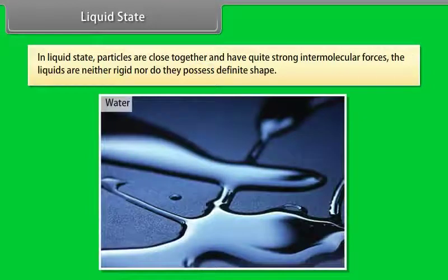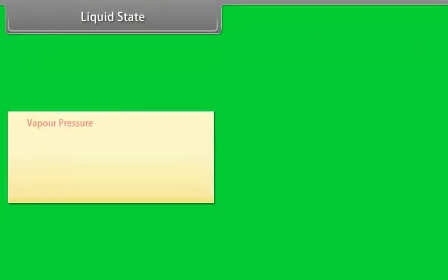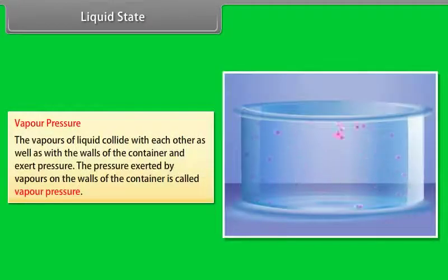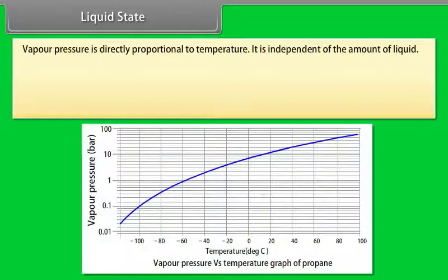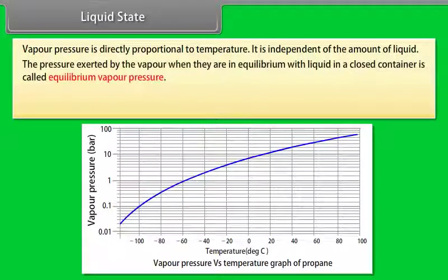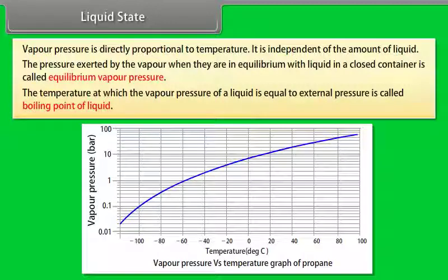Liquid state: in the liquid state, particles are close together and have quite strong intermolecular forces. Liquids are neither rigid nor do they possess a definite shape. Vapor pressure: the vapors of a liquid collide with each other as well as with the walls of the container and exert pressure. The pressure exerted by vapors on the wall of the container is called vapor pressure. Vapor pressure is directly proportional to temperature and is independent of the amount of liquid. The temperature at which the vapor pressure of a liquid equals external pressure is called the boiling point of the liquid.